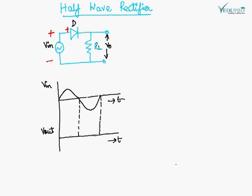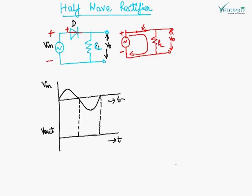The positive anode makes the diode forward biased. When the diode is forward biased, it behaves as a short circuit. The equivalent circuit at this moment is shown here, with the diode represented by a short circuit. The current in this circuit will flow in this direction. The voltage drop across RL will be the same as the input voltage. Therefore, the output voltage will be equal to the input voltage when the input is in the positive cycle.